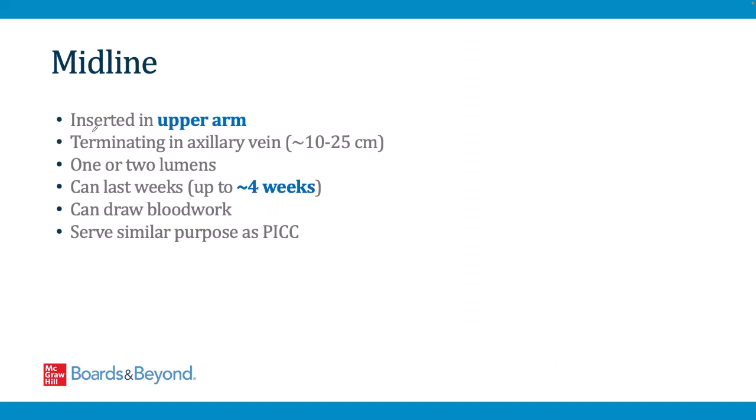A midline is essentially a long peripheral IV. The catheter is inserted in the upper arm, similar to a PICC, but terminates after about 10–25 cm up in the axilla. These catheters can have 1 or 2 lumens, last up to about 4 weeks, and can generally be used to draw blood. Midlines can serve similar purposes to PICC lines. PICCs generally have better lifespan, durability, and reliability, but the two options can largely accomplish the same things.